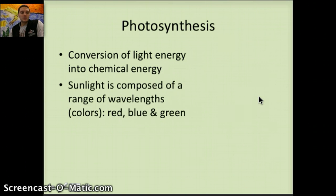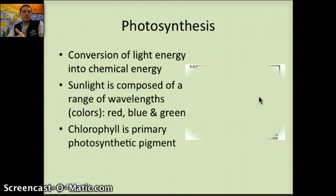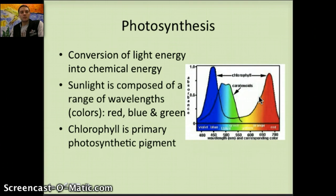Sunlight is composed of a range of wavelengths. We don't always necessarily see these. If there's a rainbow we can see a reflection or the splitting of the light into the different colors. But sunlight is actually composed of a couple of different wavelengths, and plants can use these different wavelengths to photosynthesize. Some of these wavelengths have a better impact overall on the rate of photosynthesis and the ability to photosynthesize.